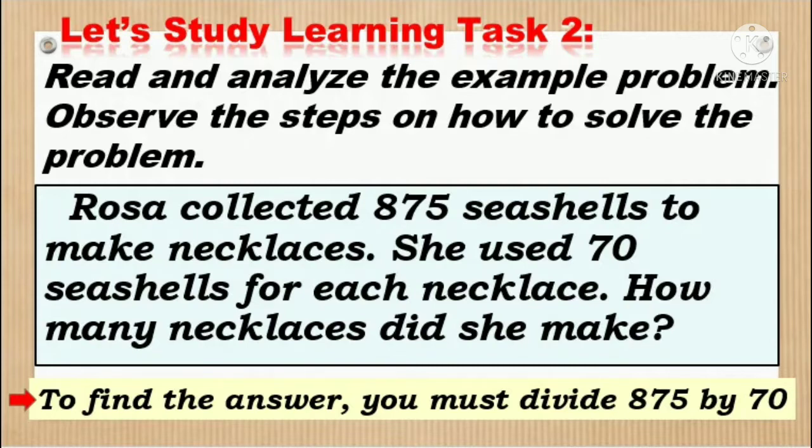Read and analyze the example problem. Rosa collected 875 seashells to make necklaces. She used 70 seashells for each necklace. How many necklaces did she make? To find the answer, you must divide 875 by 70.